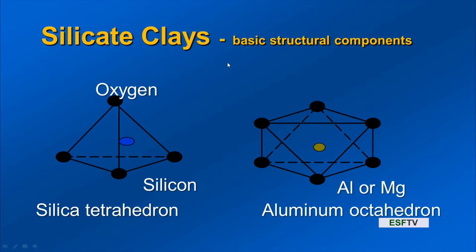The other important unit is the aluminum or magnesium octahedron. It has six hydroxyls covalently coordinated around an aluminum — and sometimes magnesium. Whether it's aluminum or magnesium, we'll get into that discussion. For now we have a silicate tetrahedron and an aluminum octahedron, and these are the fundamental pieces that we stack together to make these clays.